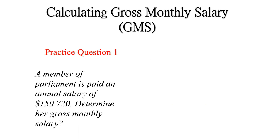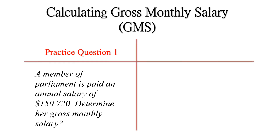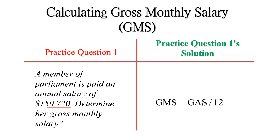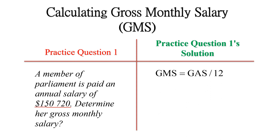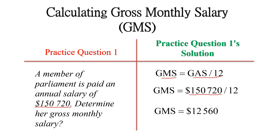Here is a practice question for you to do — pause the video and attempt it. A member of parliament is paid an annual salary of $150,720; determine his gross monthly salary. GMS = GAS ÷ 12, so $150,720 ÷ 12 = $12,560. That is the gross monthly salary for the parliamentarian.